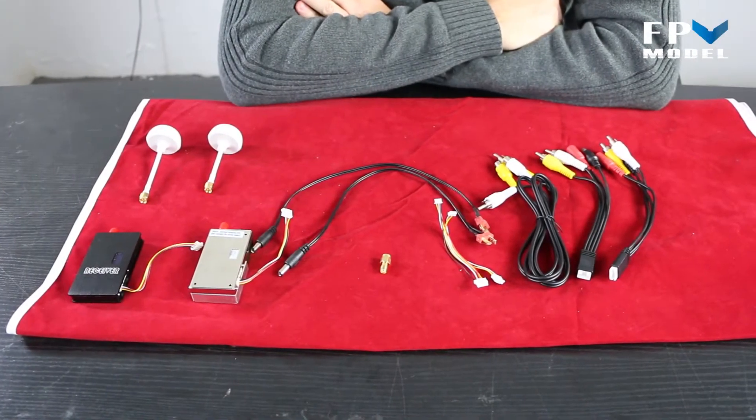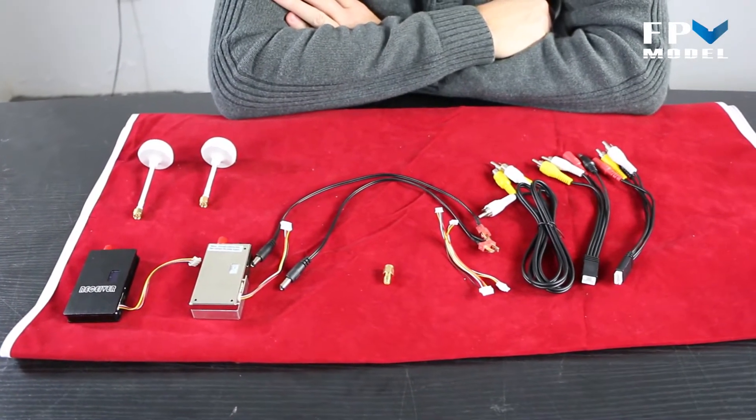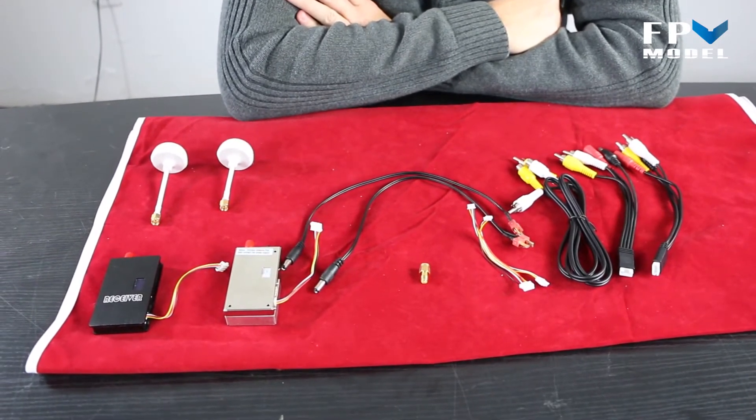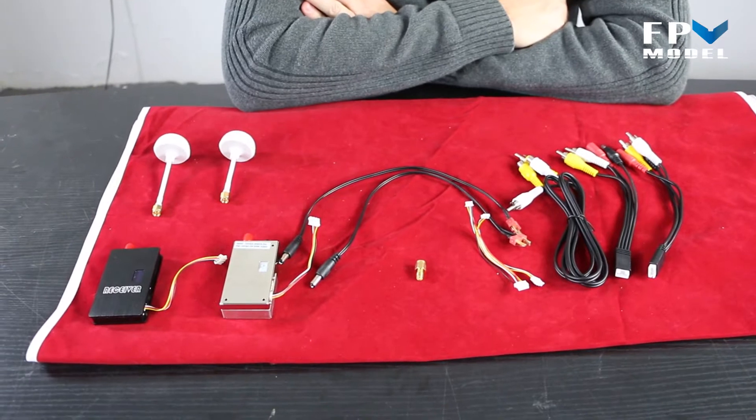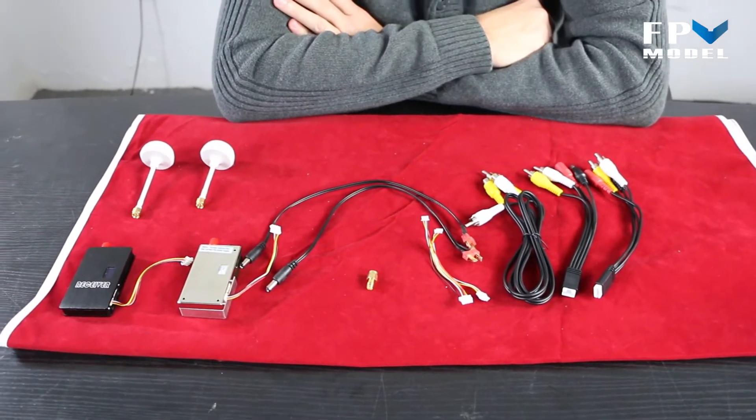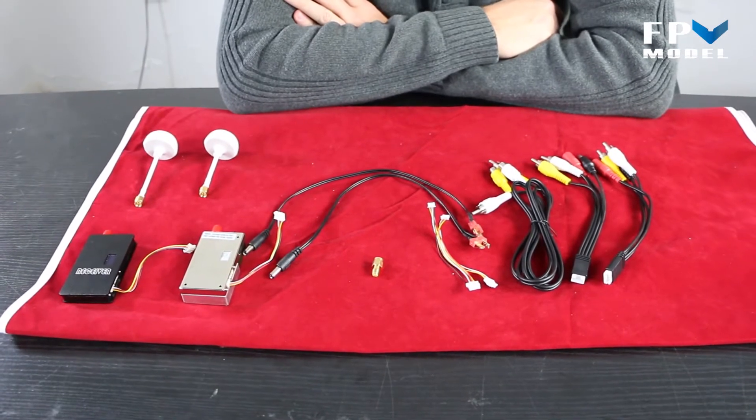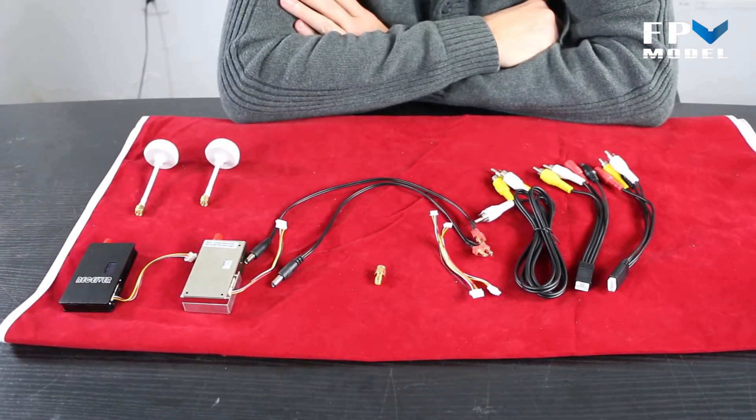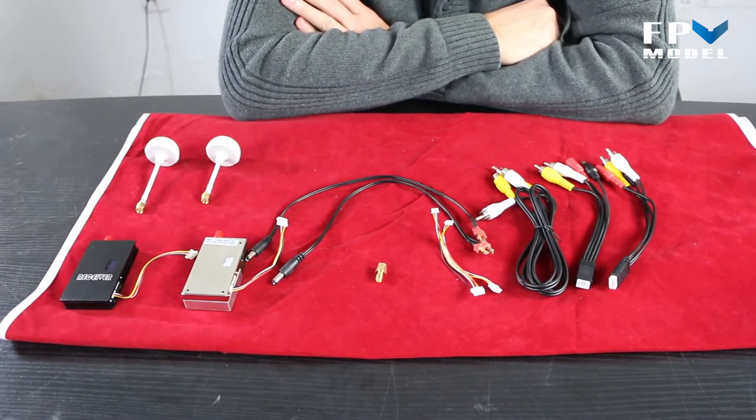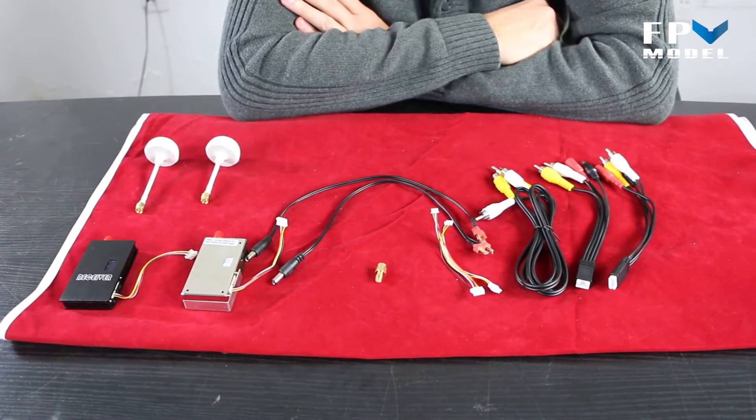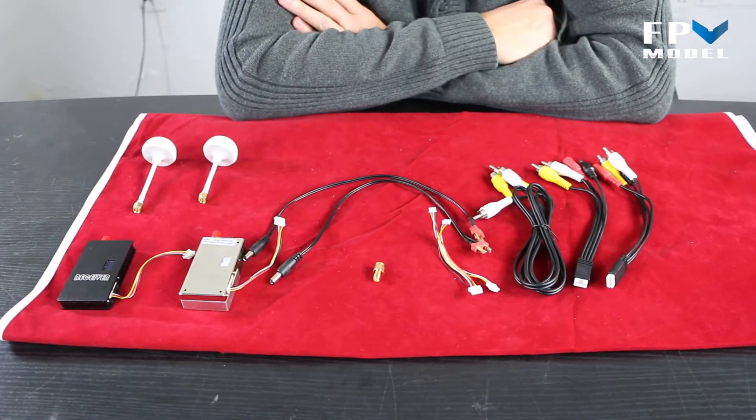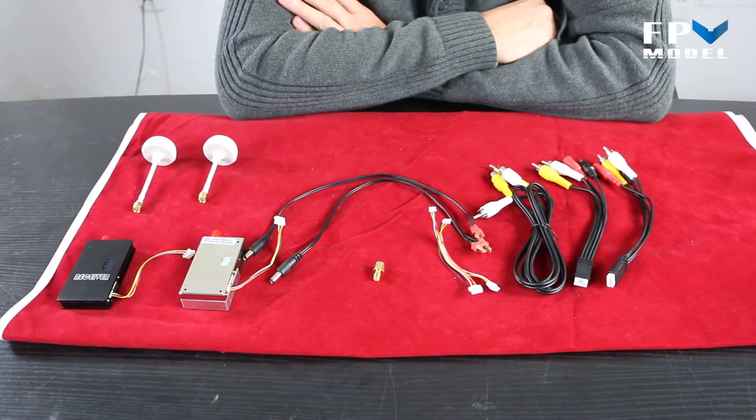Okay guys, so today we're going to talk about the 5.8 gigahertz 1,200 milliwatt video transmitter and receiver. We've had some questions about it recently. Some people are having issues with the transmitter. They do not know that before they power the transmitter on, the video TX antenna needs to be connected to it. So we're just going to give you a quick video today about how to connect and set up the transmitter and receiver.